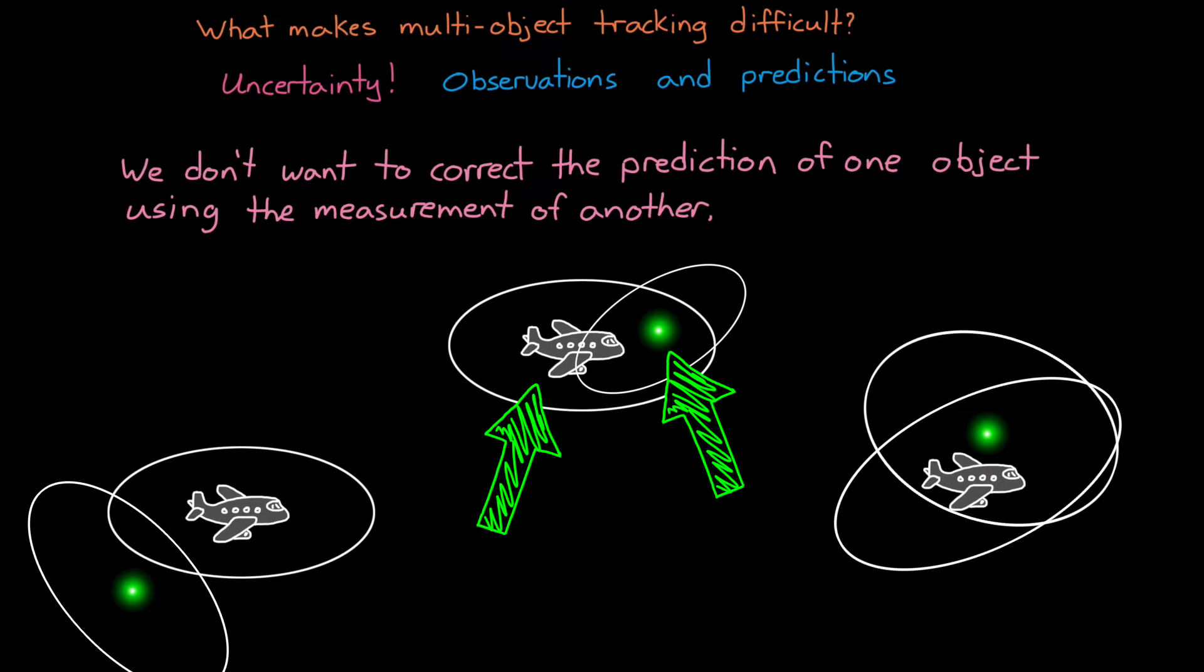Now, this isn't too much of a problem if all of the objects are sparsely distributed, and the observations are relatively reliable. It would be a simple matter to claim that an observation is of the object that it's closest to. In this case, we would just assign the measurement to the nearest object, and run the estimation filter for it like we would when tracking a single object.